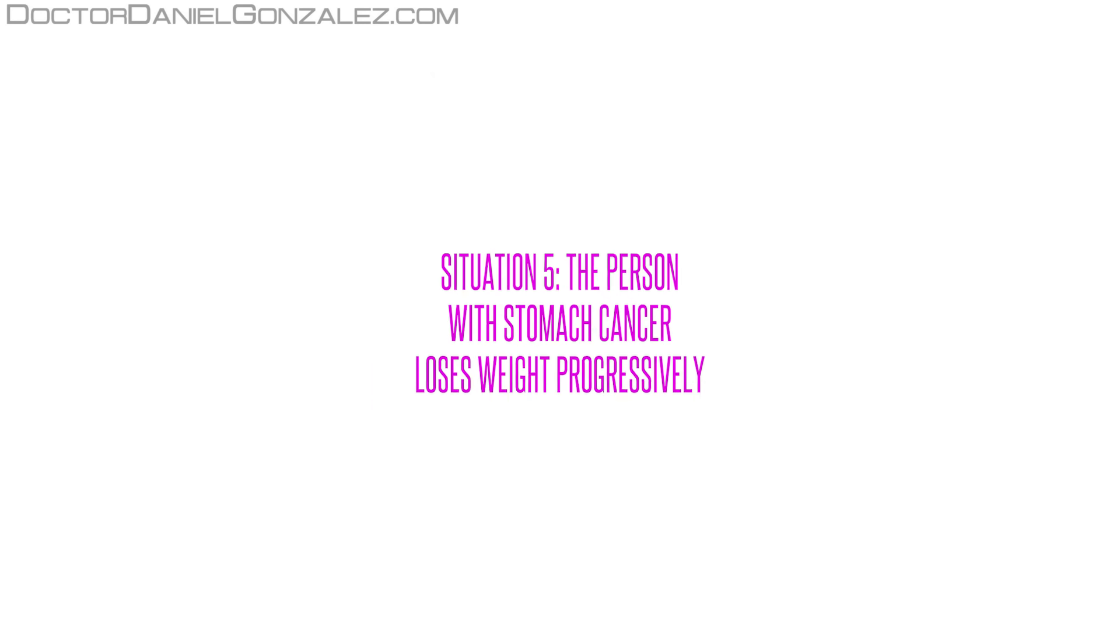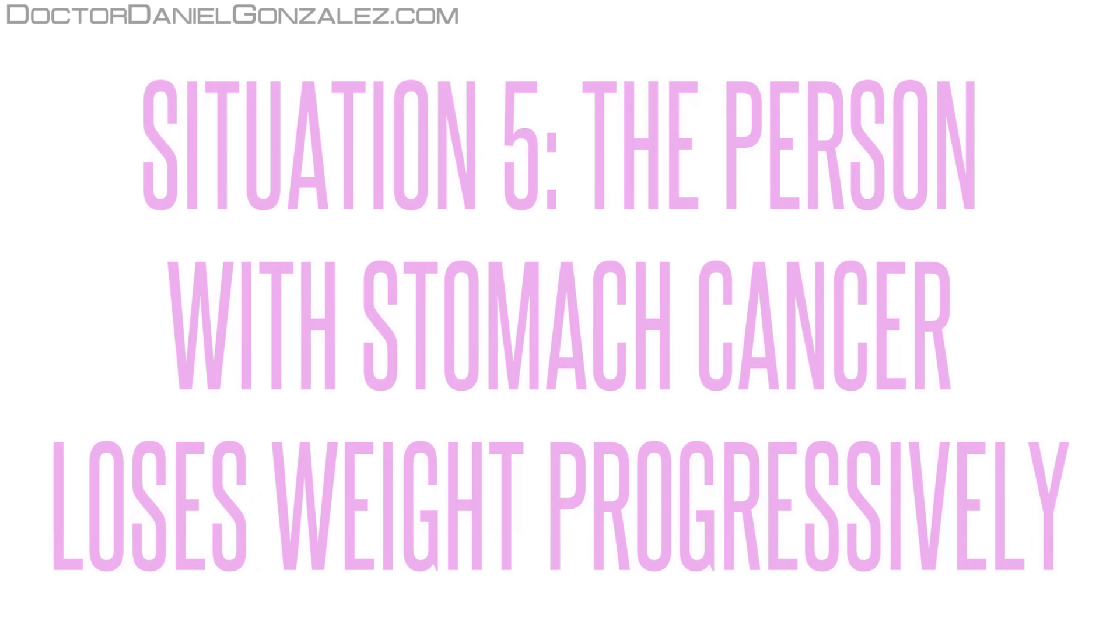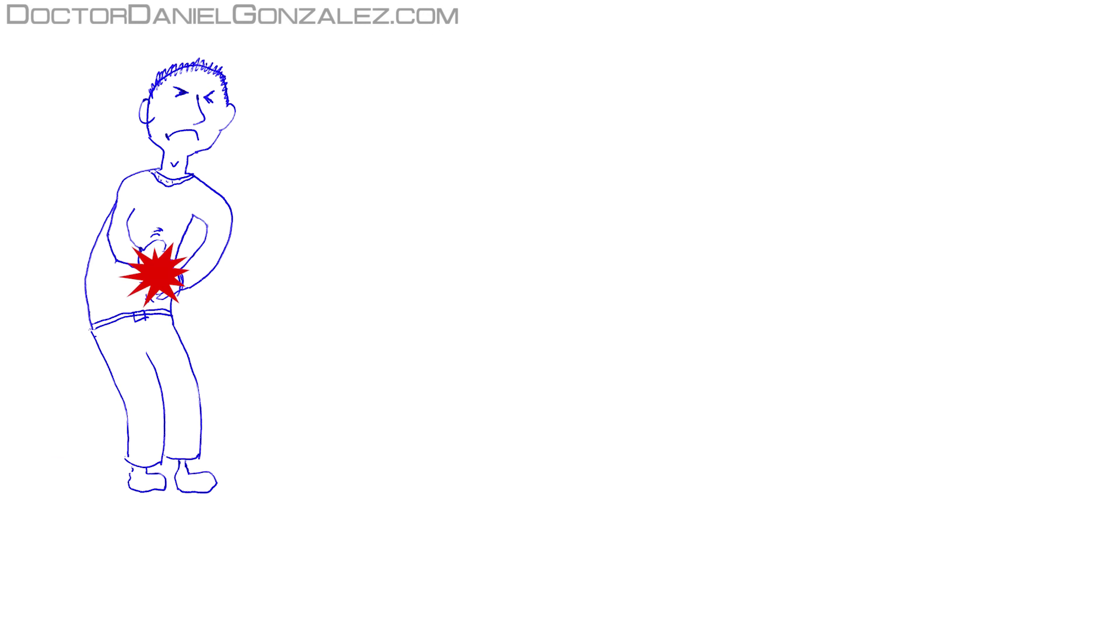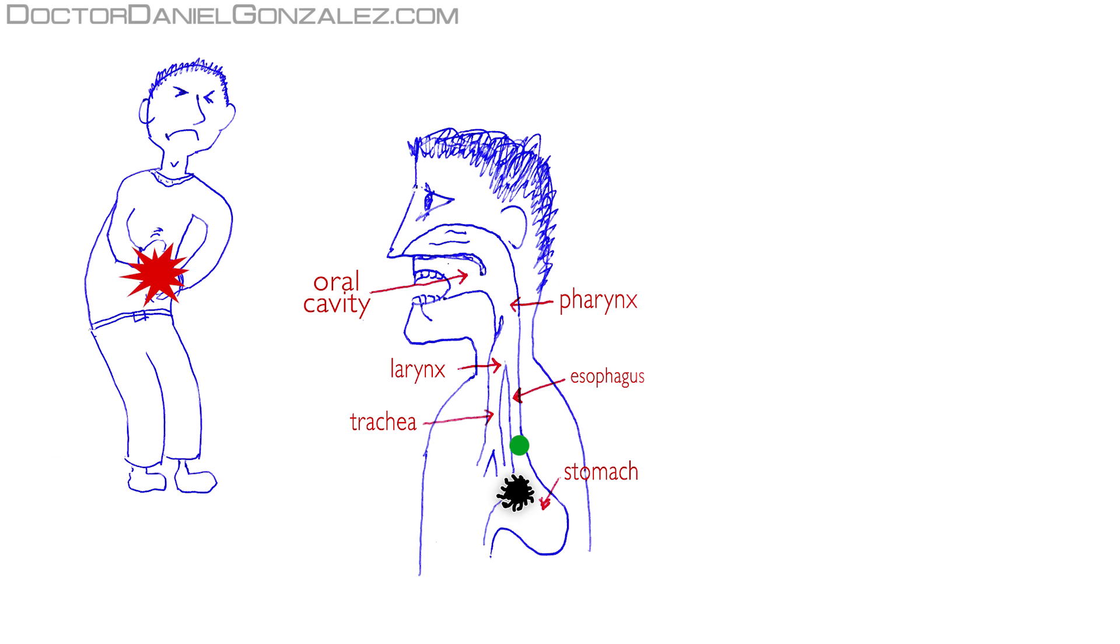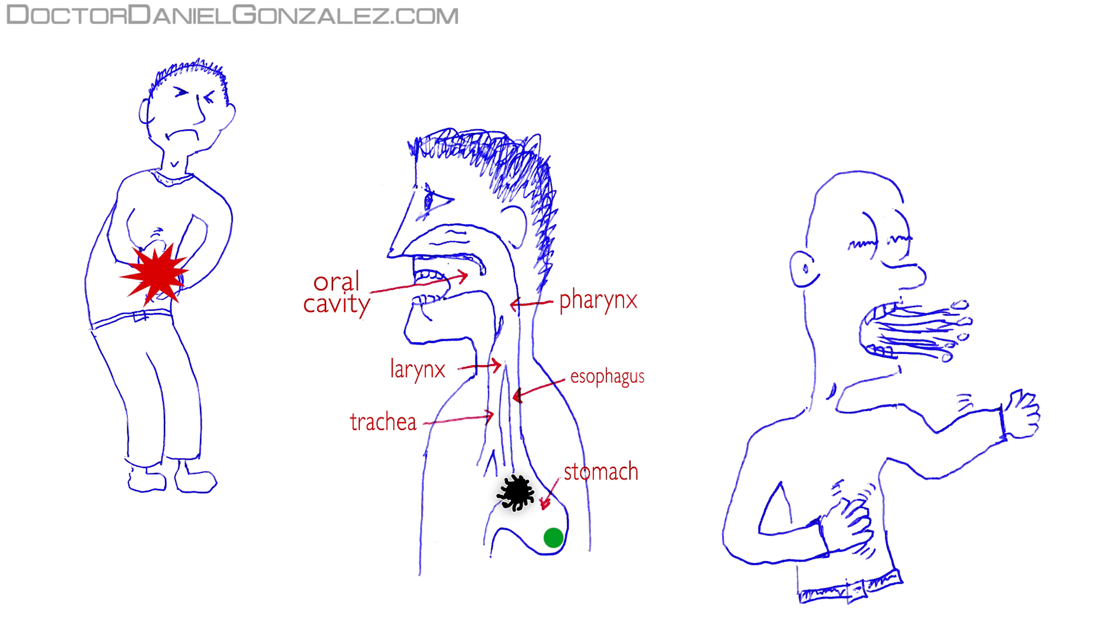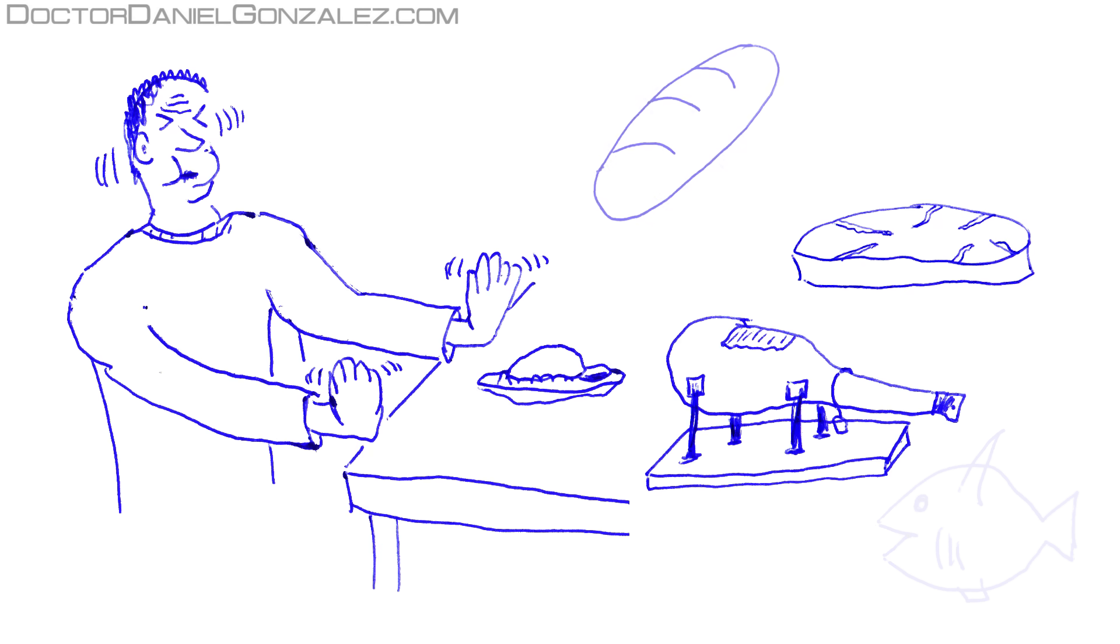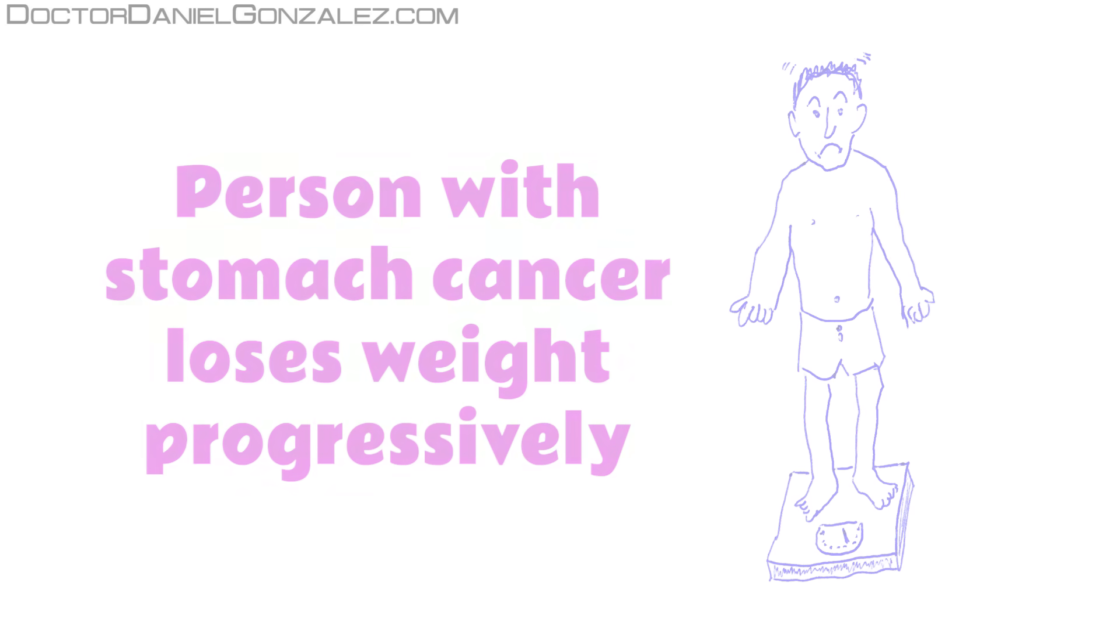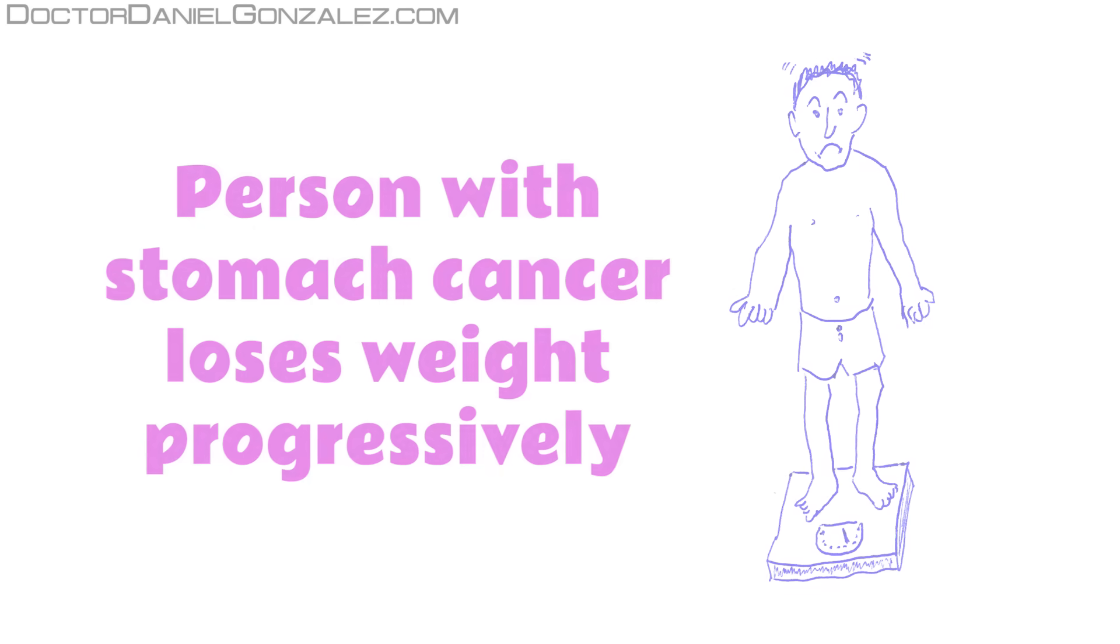Situation 5. The person with stomach cancer loses weight progressively. Either because of a stomach ache, or because food is stuck when it enters the stomach, or because of the vomit, or because stomach feeds little food, the person with gastric cancer begins to eat fewer calories. Gradually, the person with stomach cancer will get thinner and thinner.